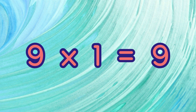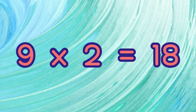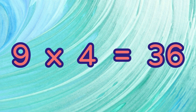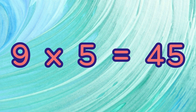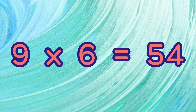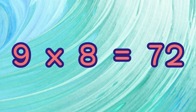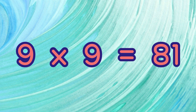9 x 1 equals 9. 9 x 2 equals 18. 9 x 3 equals 27. 9 x 4 equals 36. 9 x 5 equals 45. 9 x 6 equals 54. 9 x 7 equals 63. 9 x 8 equals 72. 9 x 9 equals 81.